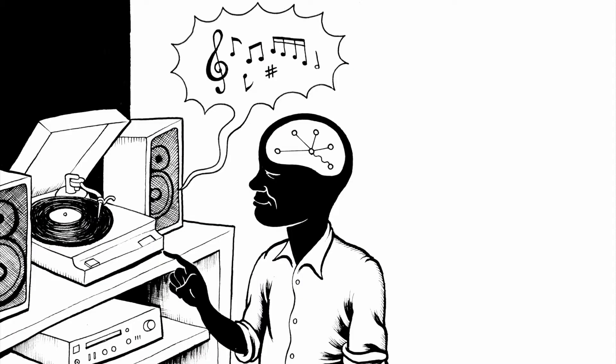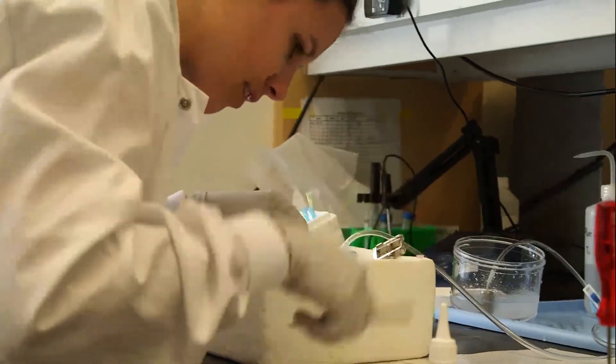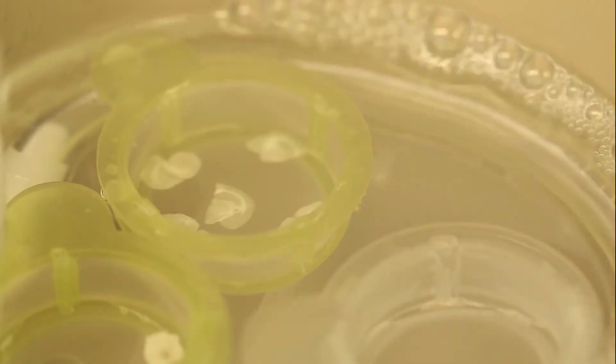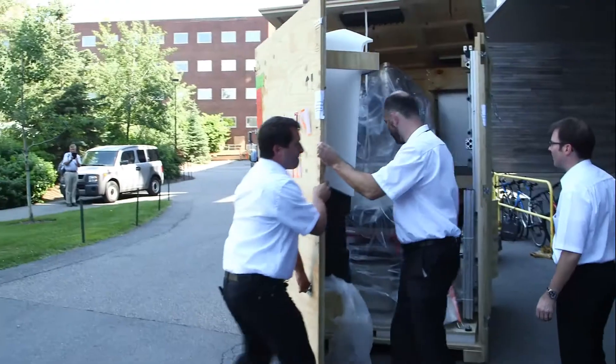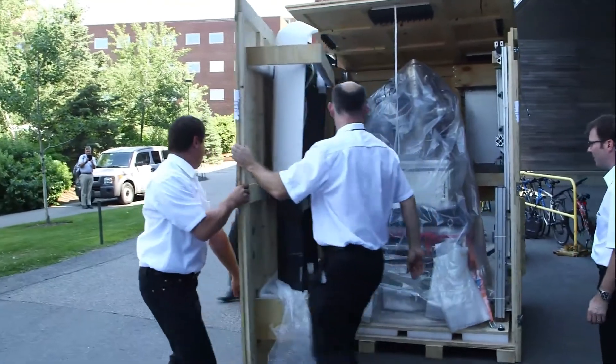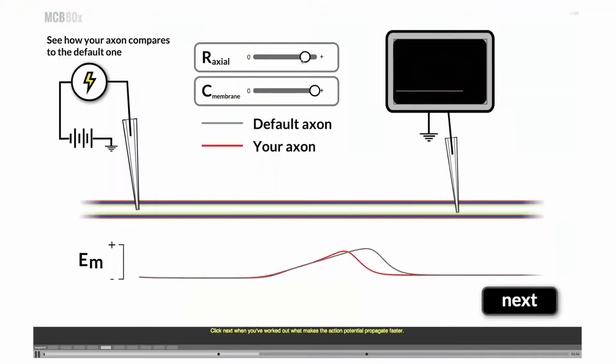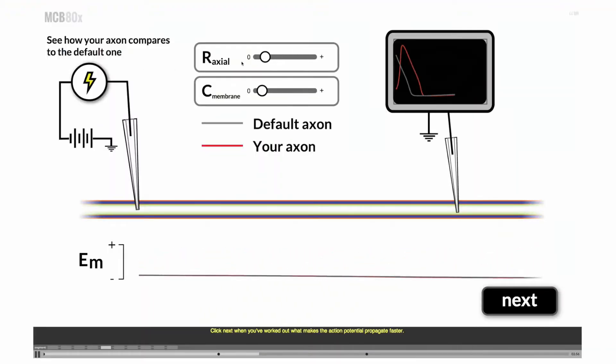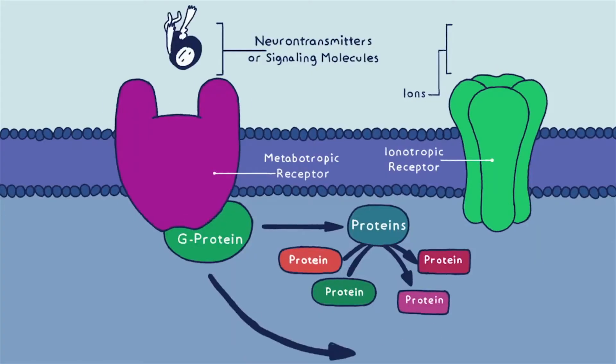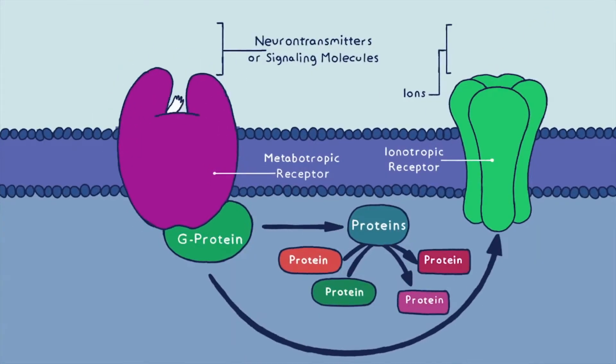We'll learn about neuromodulation and the different ways in which we learn, modify, and embed information via our neural circuitry. Each lesson will be media and content rich and will challenge you to master the material with interactive segments that depend on your feedback to move forward in the lesson. You'll also be able to use virtual labs simulating neurons and neuronal circuitry to test your understanding of the course material.